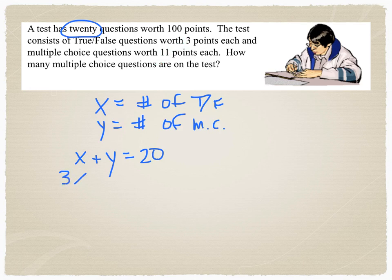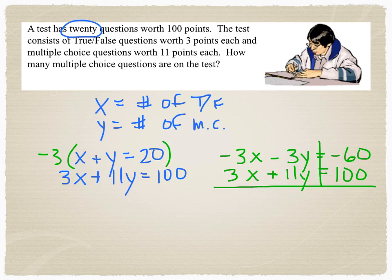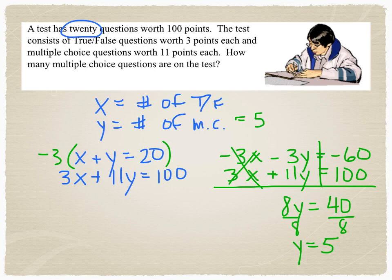Your true-false questions are worth 3 points apiece. And the multiple-choice are worth 11 points apiece. And once again, we are not set up for substitution or elimination. I can multiply the entire first equation by negative 3. Which would give me negative 3X minus 3Y equals negative 60. My other choice would have been to multiply by negative 11. But let's do the Xs. Negative 3Y and 11Y is 8Y. Negative 60 and 100 is 40. Divide both sides by 8. Y equals 5. So there are only 5 multiple-choice questions on this test.